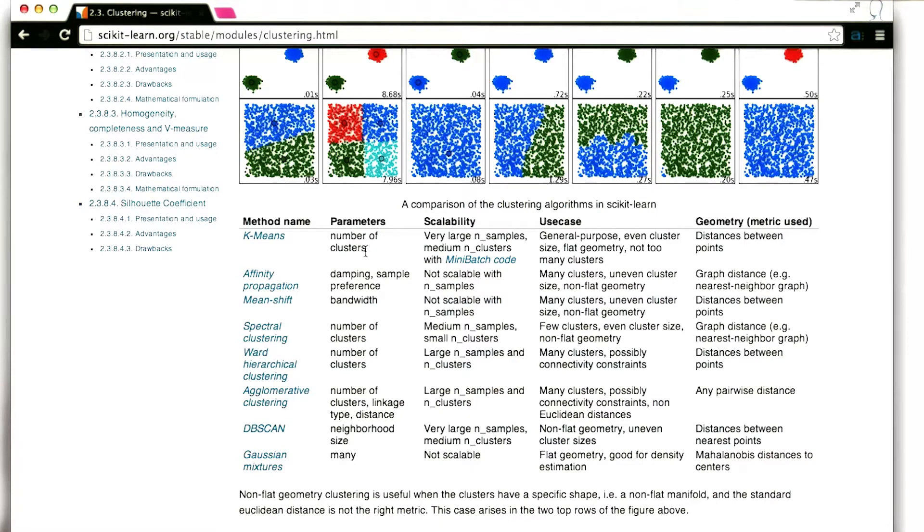So one of the parameters that you have to define for K-means is the number of clusters. Remember, we had to say at the outset how many clusters we want to look for. And this is one of the things that can be most challenging actually about using K-means is deciding how many clusters you want to try.